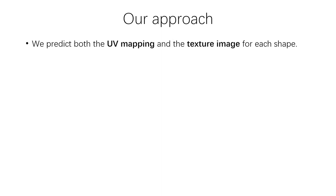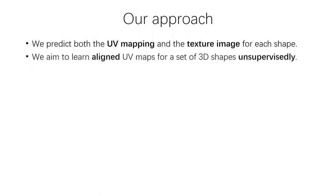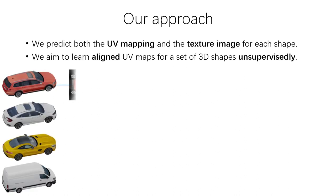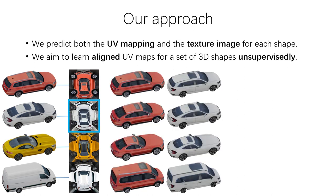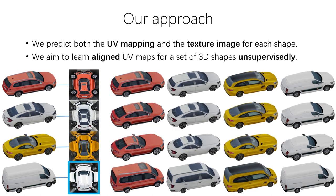In our approach, we predict both the UV mapping and the texture image for each shape, to avoid the above issues. More importantly, we aim to learn aligned UV maps for a set of 3D shapes without any ground-truth supervision. Here are some example texture images obtained with our method. These images are well aligned, meaning that corresponding parts of different 3D shapes are mapped to the same locations in the texture image. The aligned UV maps can enable a variety of applications. For example, to transfer the texture from shape A to shape B, we only need to replace shape B's texture image with shape A's texture image.